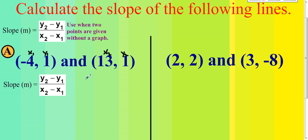Now it just becomes a substitution problem. y2 is 1, y1 is 1, so we have 1 minus 1 in the numerator. x2 is 13, and then minus x1 — the minus sign is from the formula, the negative is from the problem itself — so it's minus negative 4.